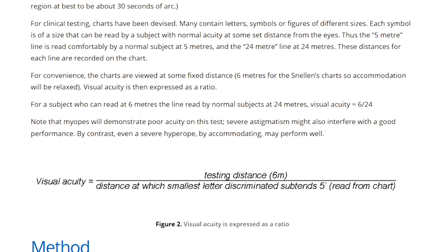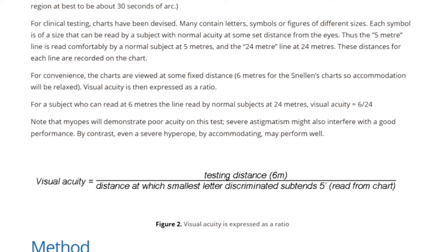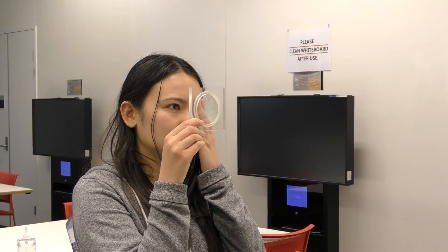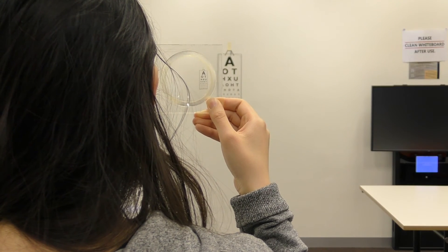People with hyperopia will generally be able to see distant objects reasonably well, so they tend not to have too much trouble reading this chart. People with myopia, however, don't see distant objects very well and so generally they'll struggle. So if you were a normal sighted person using a negative lens to convert you into a hyperope, you would still be able to perform quite well.